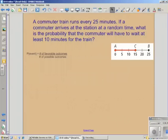A commuter will have to wait at least ten minutes for the train if the commuter arrives at any time between zero and fifteen minutes. So the red area.